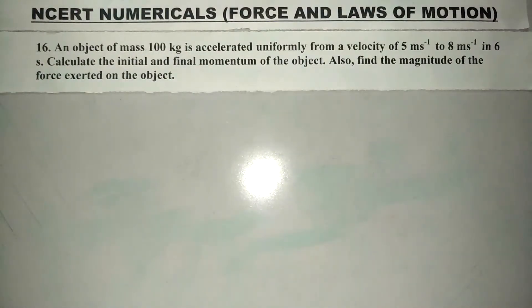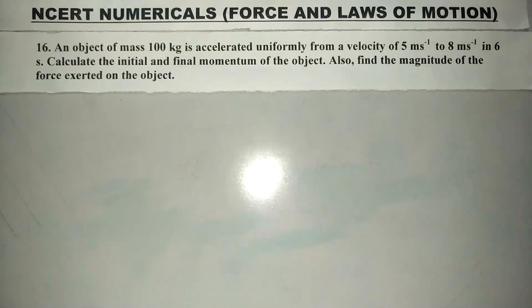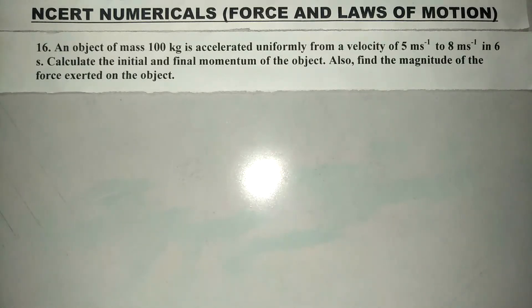Good morning, dear students. Welcome to your Physics class. Today we are going to solve the NCERT numerical from Chapter: Forces and Laws of Motion — Question Number 16. The statement is: an object of mass 100 kg is accelerated uniformly from a velocity of 5 m/s to 8 m/s in 6 seconds. Calculate the initial momentum and final momentum of the object, and also find the magnitude of the force exerted on the object.